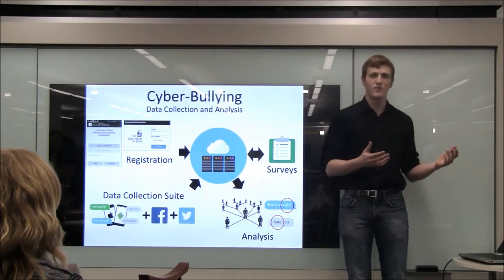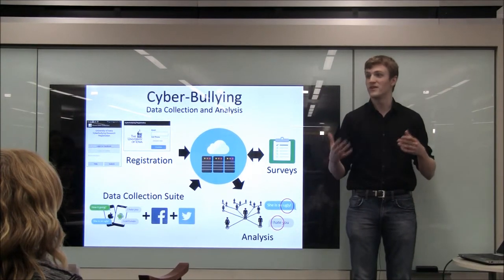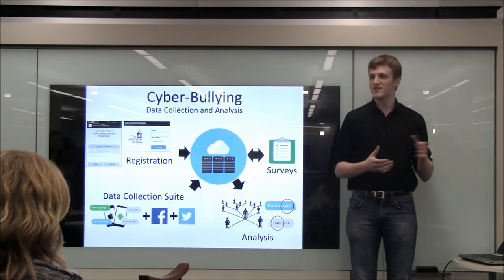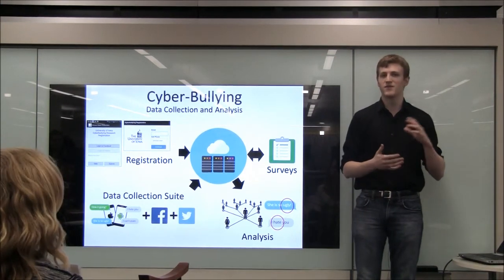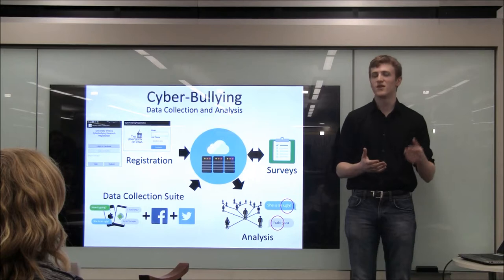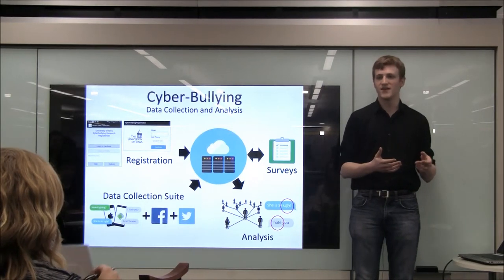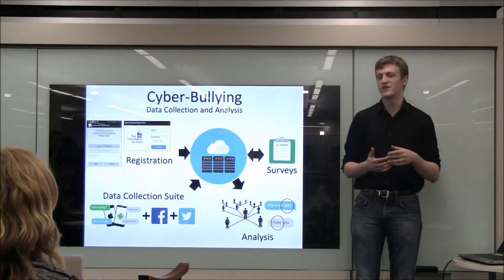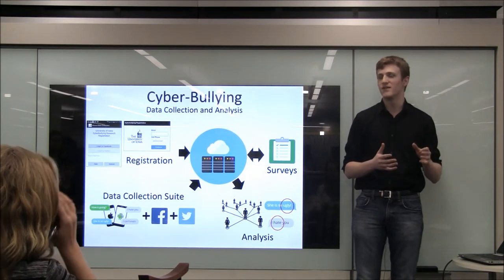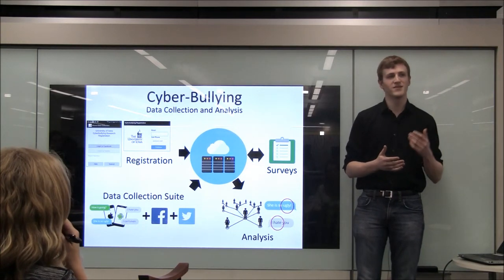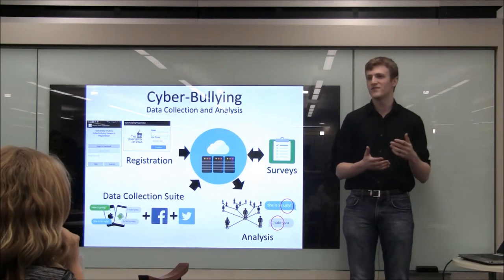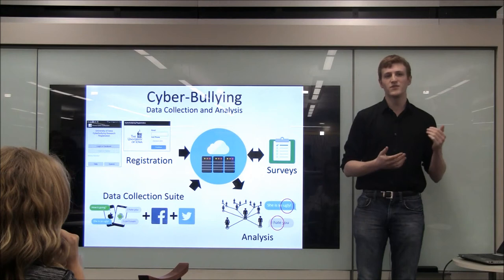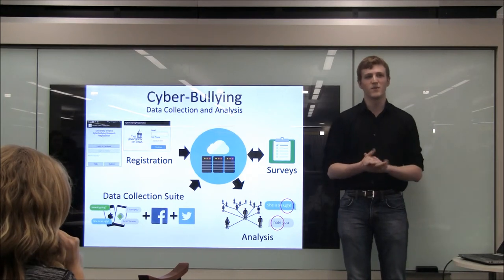So if a student says they've been bullied and the text looks like bullying, then we can say this is actually bullying. The development of this entire system — from the registration app to the data collection — should allow us to analyze this data to try and find the patterns of bullying. Right now we're still in the data collection phase and so we don't have any cyberbullying results yet, but the collection has been overwhelmingly successful with over 15,000 text messages collected and nearly 10,000 Facebook posts. Hopefully, this will allow us to identify and prevent cyberbullying in the future.